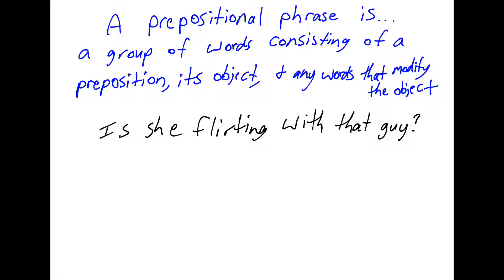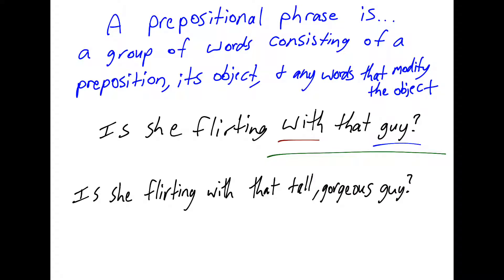A prepositional phrase is a group of words consisting of a preposition, its objects, and any words that modify the object. For example, 'with' is a preposition, 'guy' is the object, and the whole phrase 'with that guy' is a prepositional phrase. If I added several modifiers, 'with' is still my preposition, 'guy' is still my object, but my phrase is a little bit longer: 'with that tall gorgeous guy.'